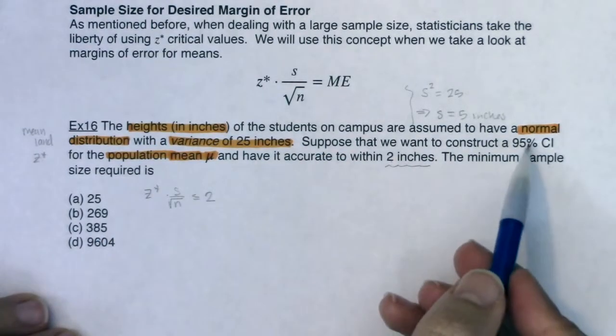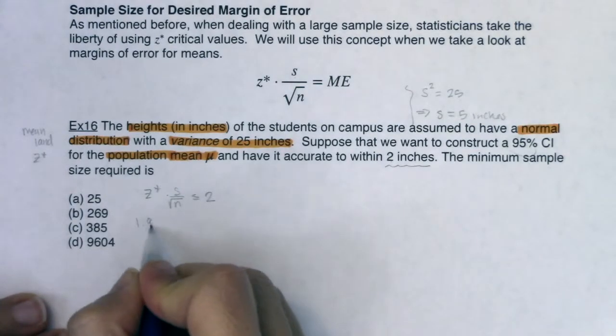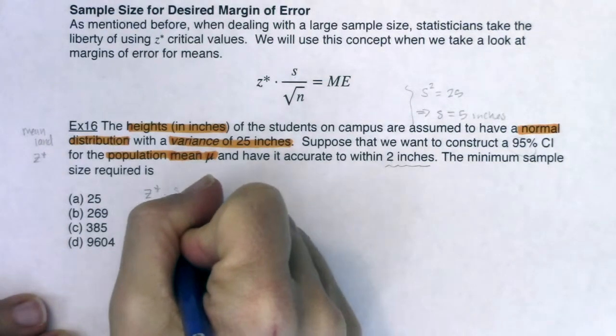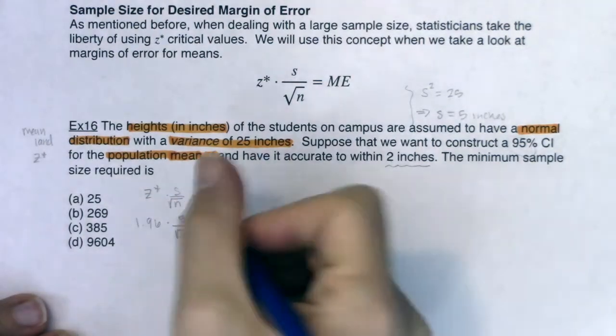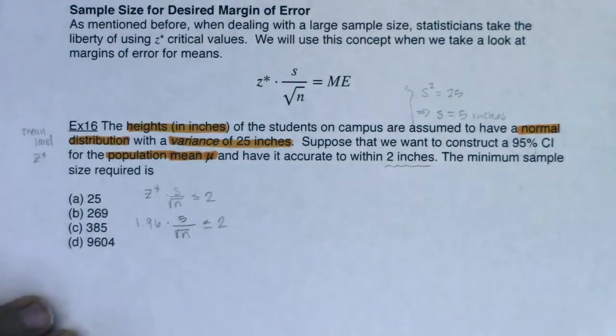All right. Less than or equal to two inches. I want a margin of error to make sure I'm accurate within two inches. So here we go. If I am going 95%, I know that the z star critical value is 1.96. I know the sample standard deviation is five. I'm going to leave the square root of n as is, because that's what I'm solving for. And I want this to be less than or equal to two.